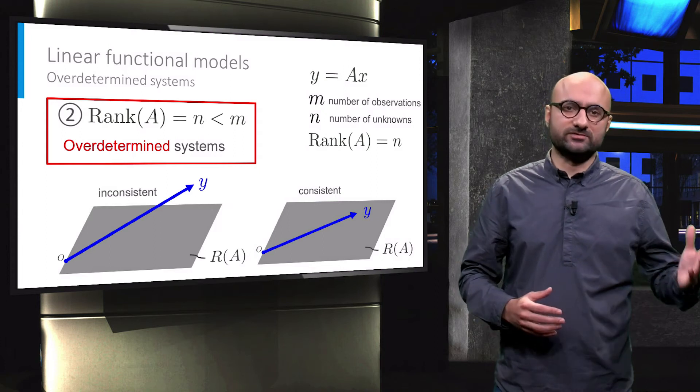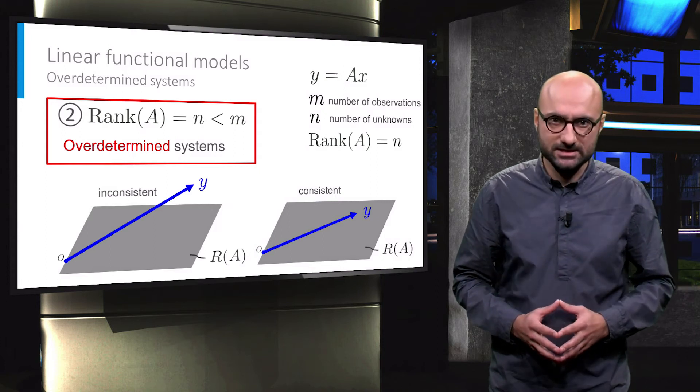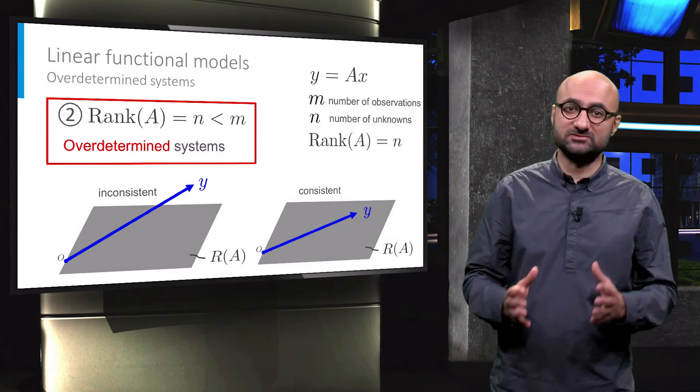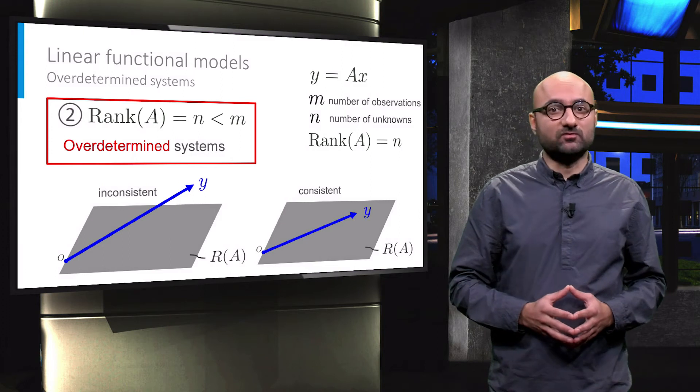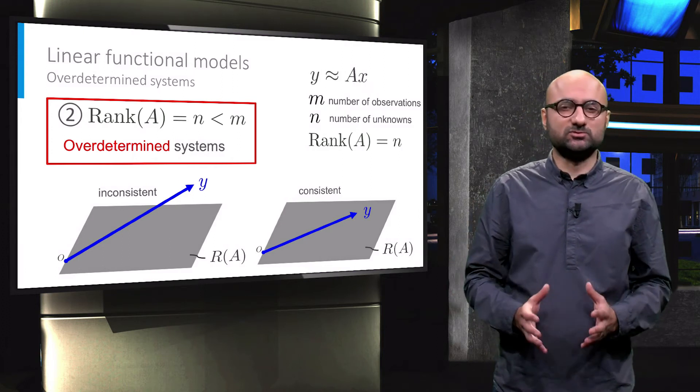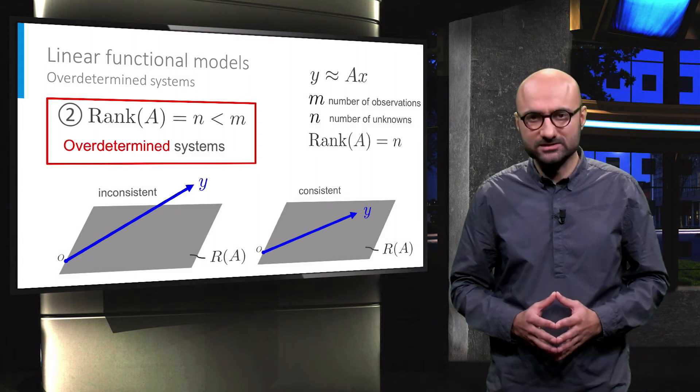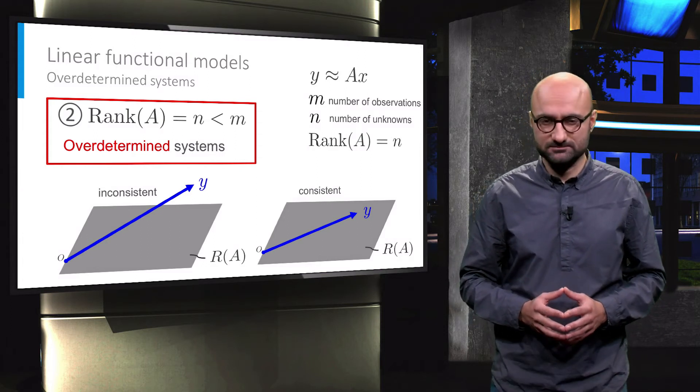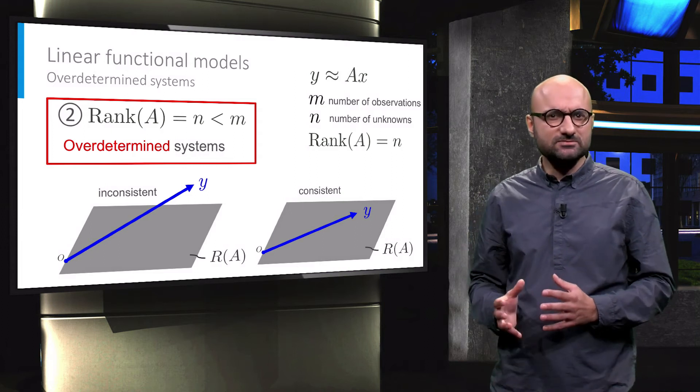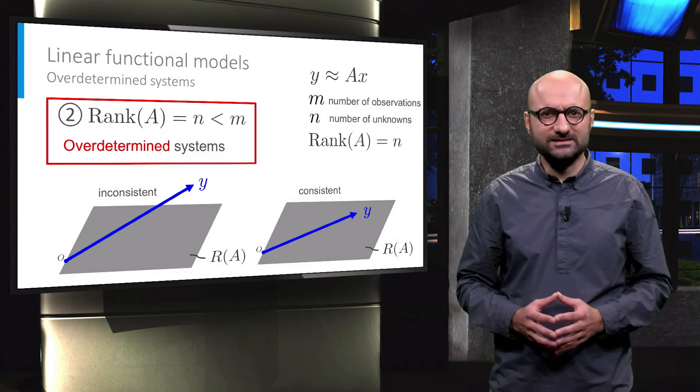In such a scenario the observation vector is outside the range space of the matrix A. So perhaps it is better, instead of writing the system of equations as y equals Ax, to write y approximately equals Ax in order to emphasize the potential inconsistency in the equations. The question now is: what to do when the system is inconsistent?